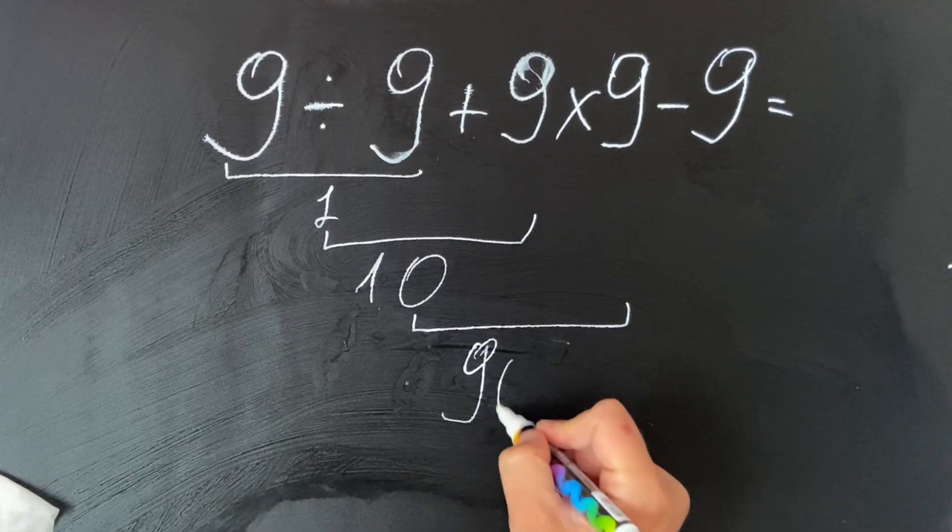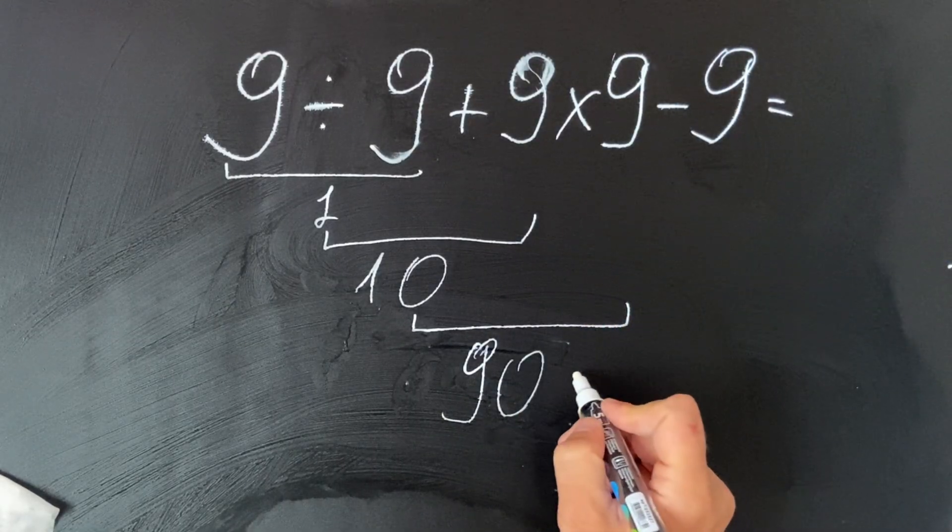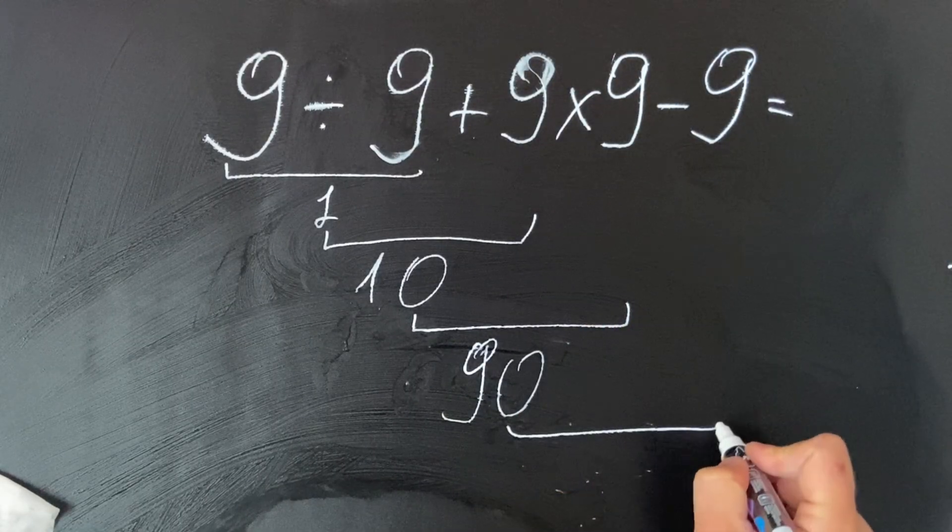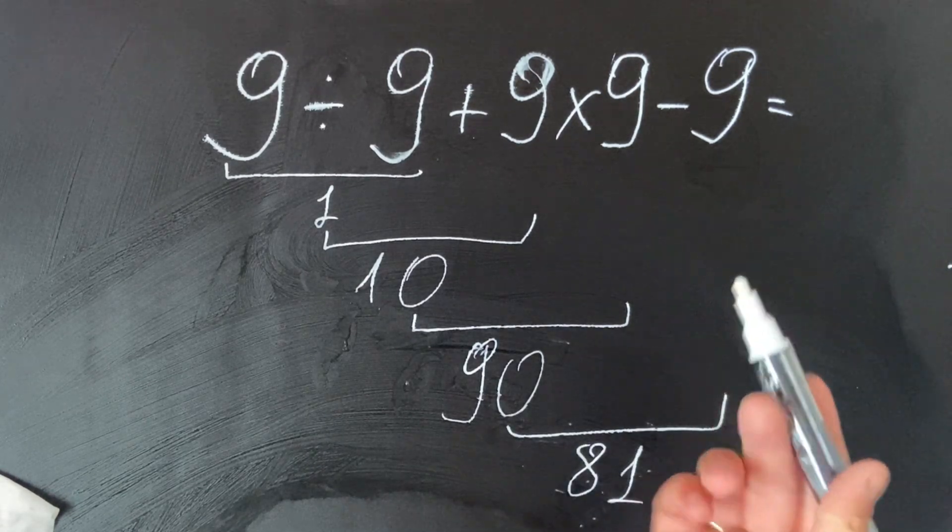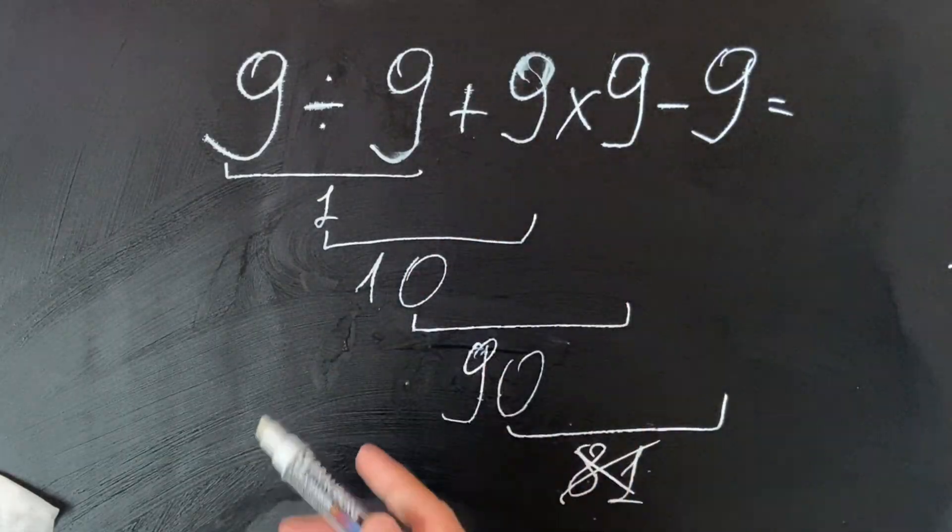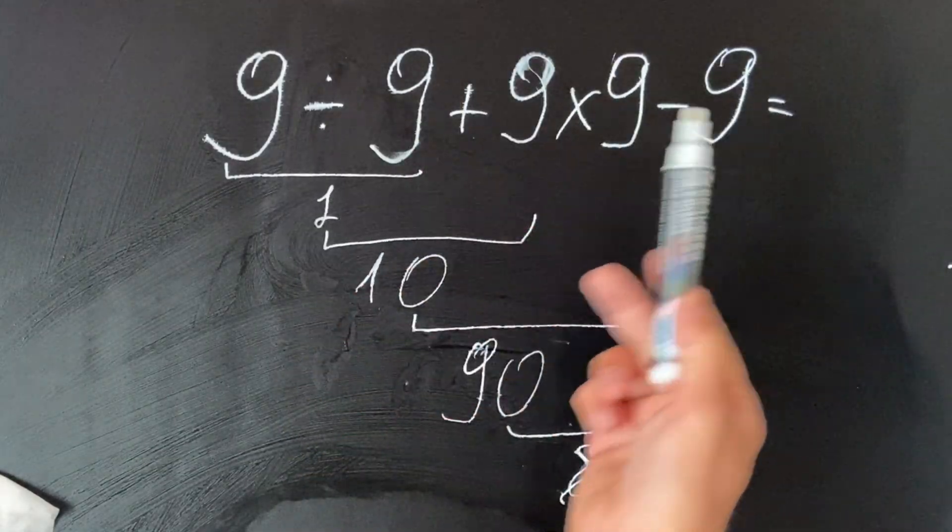And 90 minus 9 they get 81. But this is an incorrect approach because they don't follow the order of operations, where division and multiplication have priority over addition and subtraction.